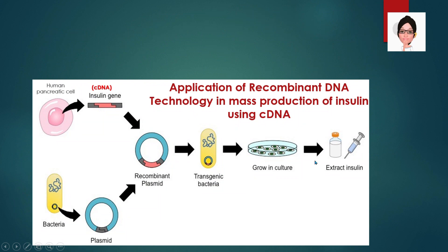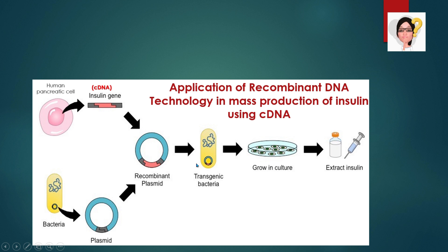This is the overview about the application of recombinant DNA technology in mass production of insulin using cDNA. We have learned that there are 5 steps in gene cloning and all of those steps will be applied.